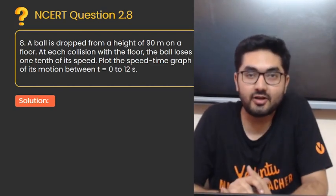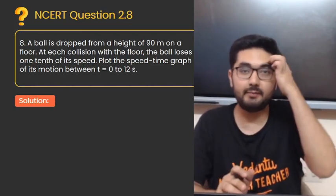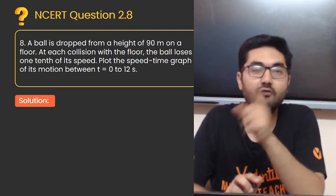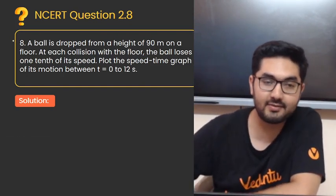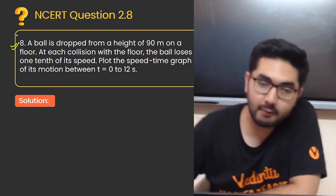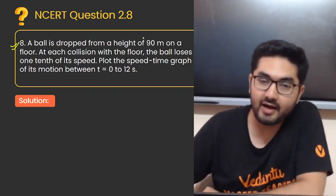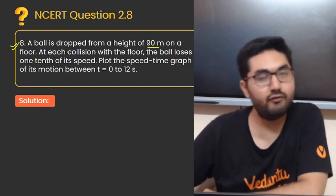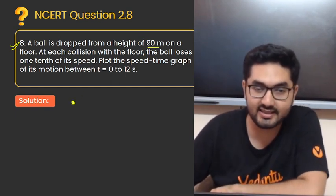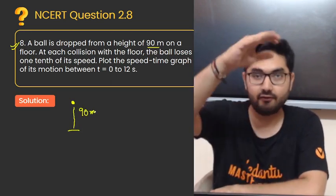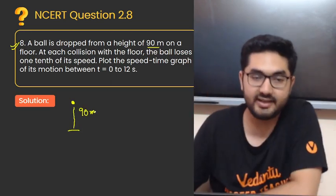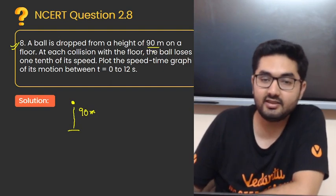Hello everyone, this is Chandra Nganotra and today we are going to do question number 8 from chapter 2 of class 11, that is motion in a straight line. What has been asked in the question? A ball is dropped from a height of 90 meters on a floor.